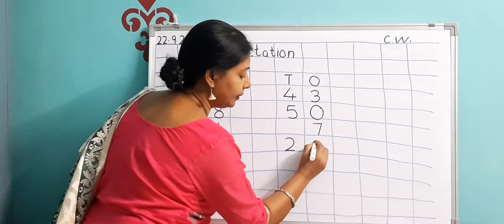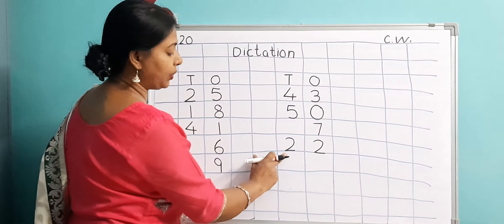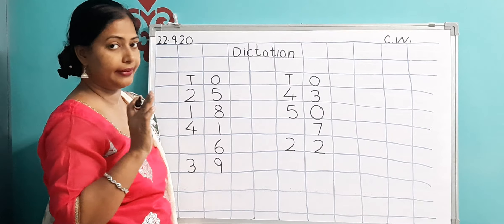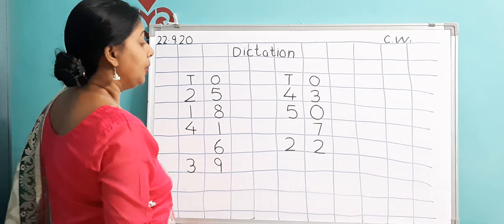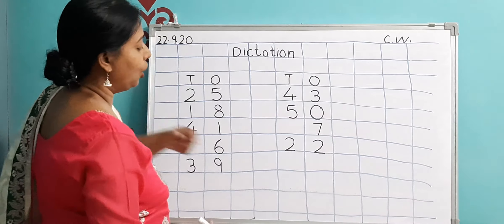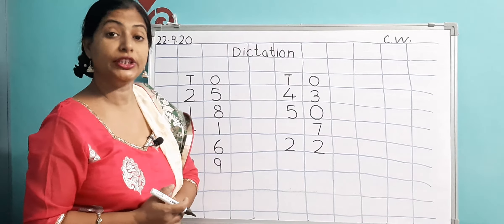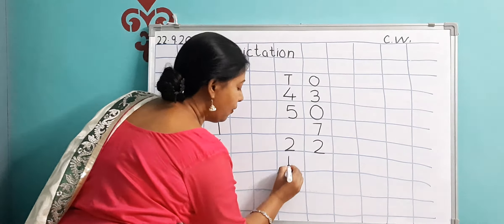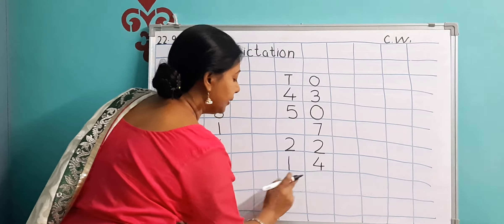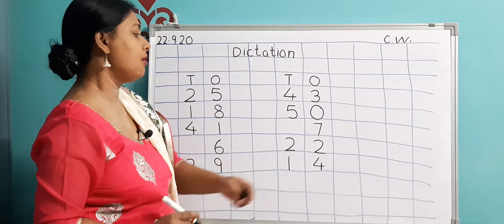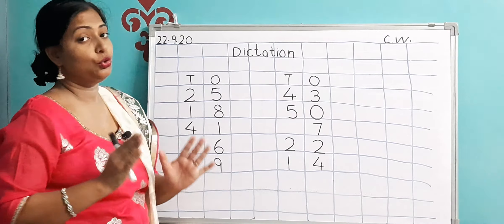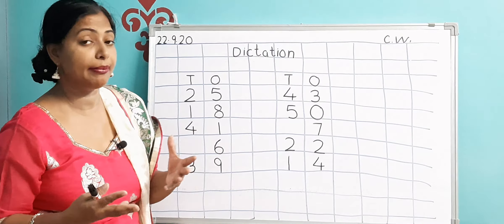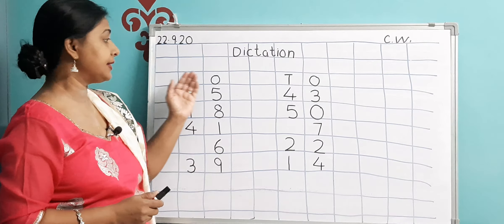Next number is 22 — 2 and 2, 22. So 2 goes in the Tens column and 2 in the Ones column. In dictation we give only 10 numbers — 5 on this side and 5 on this side. The last number you are going to write is number 14. That means 1 and 4 — 14. So 1 goes in the Tens column and 4 in the Ones column. This is 14.